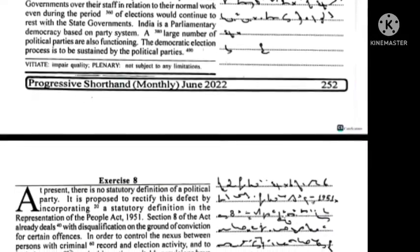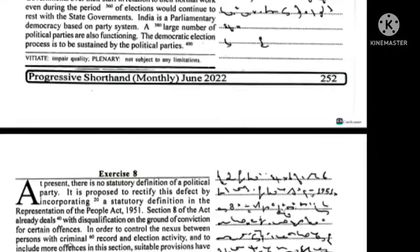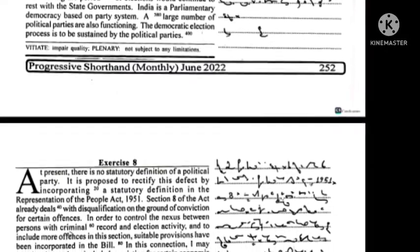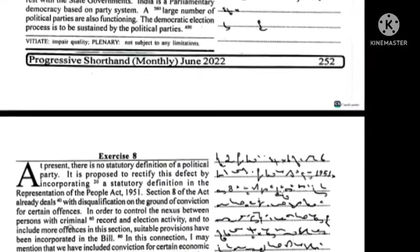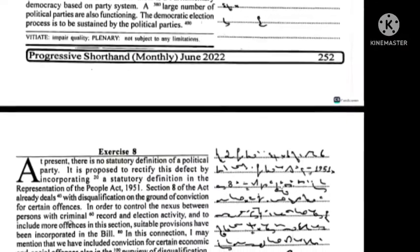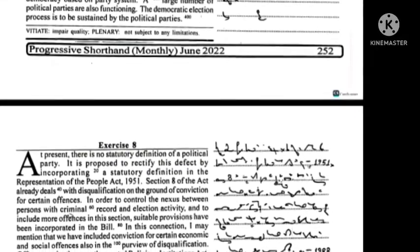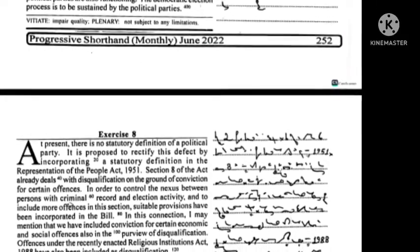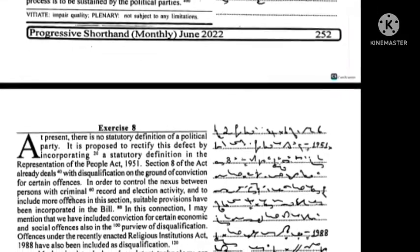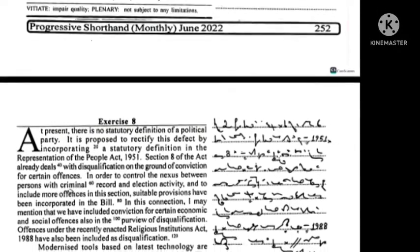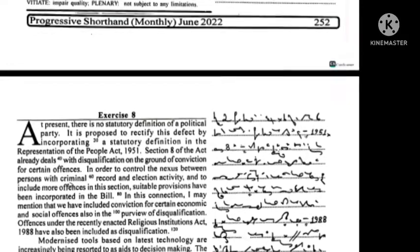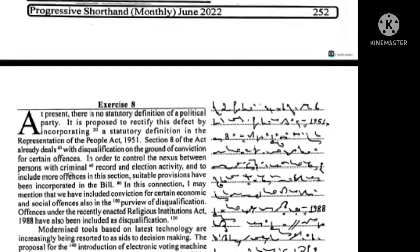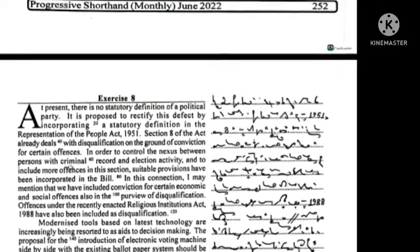Section 8 of the Act already deals with disqualification on the ground of conviction for certain offenses. In order to control the nexus between persons with criminal records and election activity, and to include more offenses in this section, suitable provisions have been incorporated in the bill. We have included conviction for certain economic and social offenses also in the purview of disqualification. Offenses under the recently enacted Religious Institutions Act, 1988 have also been included as disqualification offenses. Modernized tools based on latest technology are increasingly being resorted to as aids to decision making; the proposal for the introduction of electronic voting machines alongside the existing ballot paper system should be viewed in this light.